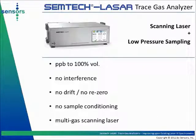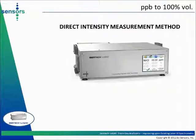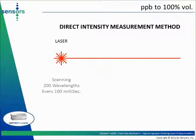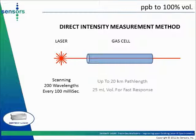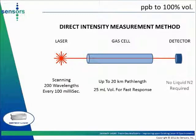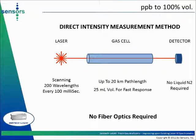Low-pressure sampling enables operation without sample conditioning for most applications. Scanning lasers enable measurement of several gases using a single laser. The Semteklas R is a direct-intensity measurement spectrometer — it does not rely on ring-down-time measurement to calculate gas concentrations. This simple spectrometer consists of a laser scanning 200 wavelengths every 100 milliseconds, a resonant cavity gas cell providing up to 20 kilometers of path length for increased sensitivity, and a detector that does not require liquid nitrogen cooling. The gas cell is only 25 milliliters in volume, allowing for fast response. No fiber optics are required, neither in the construction nor the operation of the analyzer.